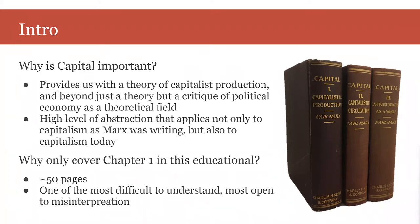Capital, and particularly volume one, provides us with a theory of capitalist production, and beyond just a theory, but a critique of political economy as a theoretical field. We often hear that the ideas presented in Capital are outdated or no longer apply to capitalism as we experience it today. But although Marx wrote Capital in the 1860s and 1870s, his argument is at such a high level of abstraction that it doesn't just apply to the capitalism that existed when he was writing it, but also to the capitalism we have today. He didn't want to show a particular historical manifestation, but rather the fundamental laws that exist in any of its manifestations.